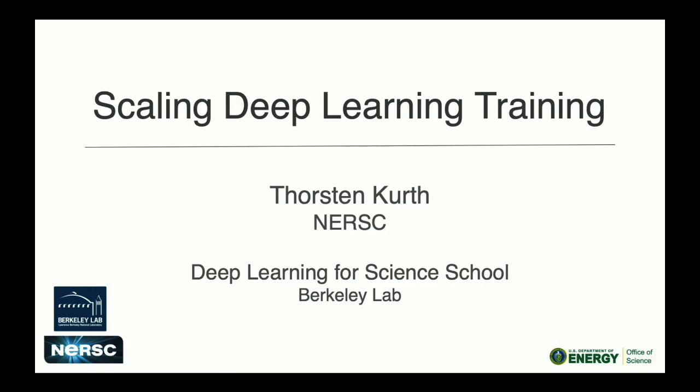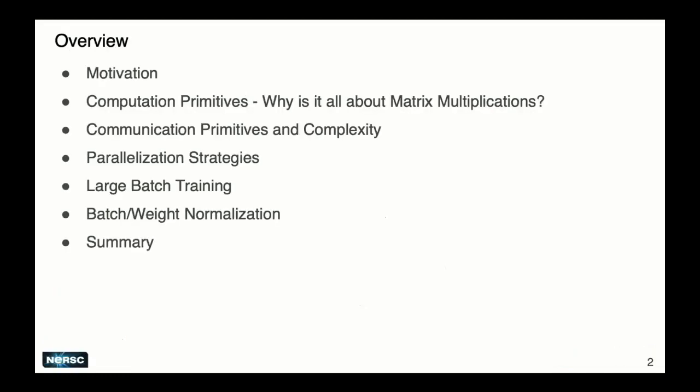I'll talk about deep learning training scaling, and I'll also cover some HPC background about communication complexity and why we care about matrix multiplication in deep learning - especially when you distribute it, you need to think about it more carefully. First, the motivation: why do distributed deep learning at all? I think most of you are motivated to do that, but it's good to point out certain things that might help.